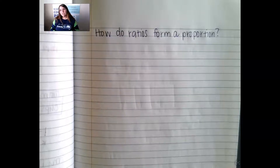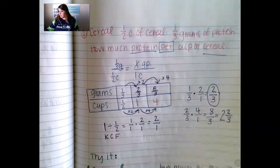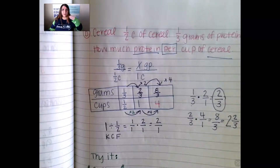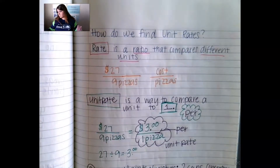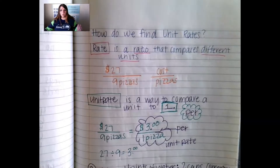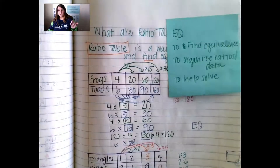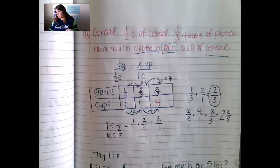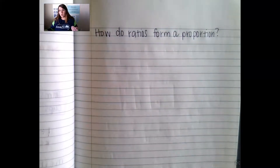Hi sixth graders. We are continuing our journey around ratios and now we're going to look at how ratios form a proportion. Yesterday we were looking at unit rate, getting our denominator down to one, and the day before that we learned how to make ratio tables. We're going to continue to use our ratio tables to find equivalents, to organize ratios, and to help us solve. We'll use this idea around ratios and equivalent ratios to talk about proportions.